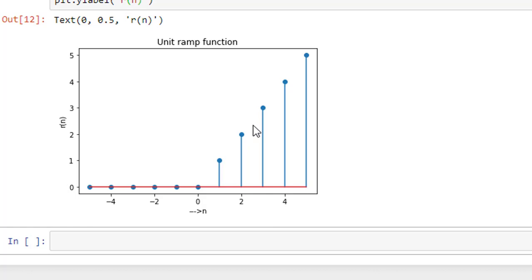So this is how the unit ramp function can be plotted in Python. And one last thing I want to say is why it is called unit ramp function - it's because the slope of this signal is 1. That is why it is called unit ramp function.